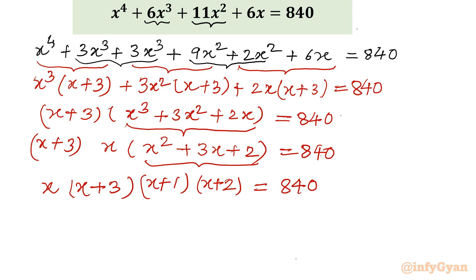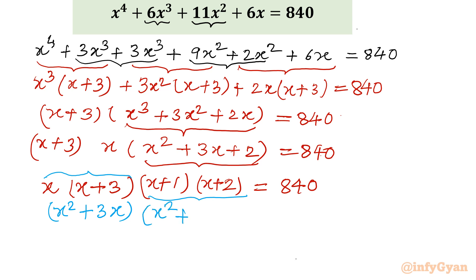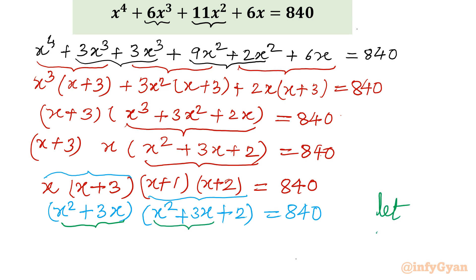Now the rest is practice. I will take the product of the first two terms: x times (x+3) gives x² + 3x. Then I will take the product of the last two terms: (x+1)(x+2) gives x² + 3x + 2. So we have (x² + 3x)(x² + 3x + 2) = 840. Notice that x² + 3x appears in both factors, so let x² + 3x = t.